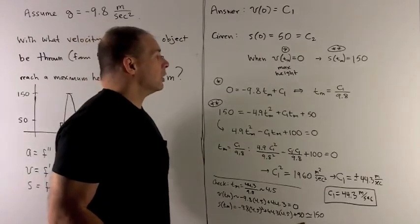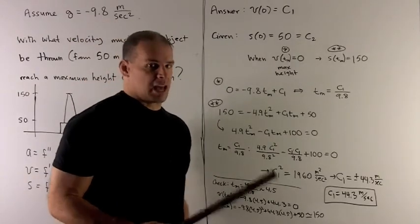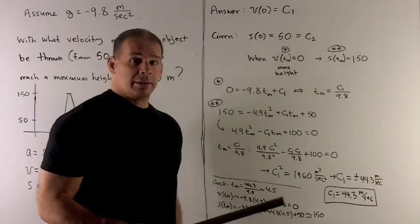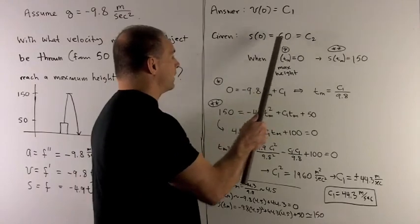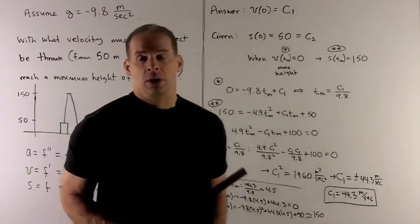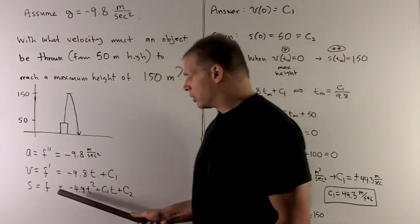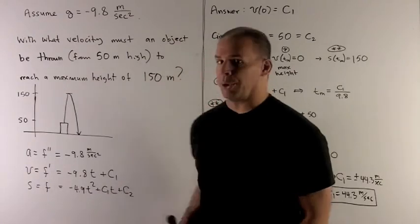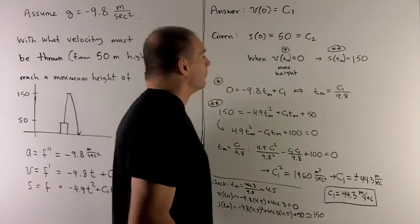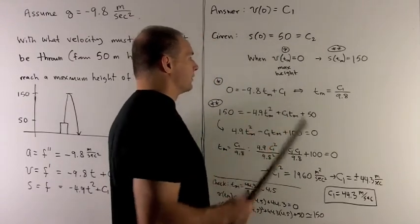What else are we given? Well, when we start out at time equals zero, we're at 50 meters high. So that's going to be s₀ = 50. But also notice, going to the position equation, if we put zero in here, everything goes away but c2. So we get for free that c2 is equal to 50.